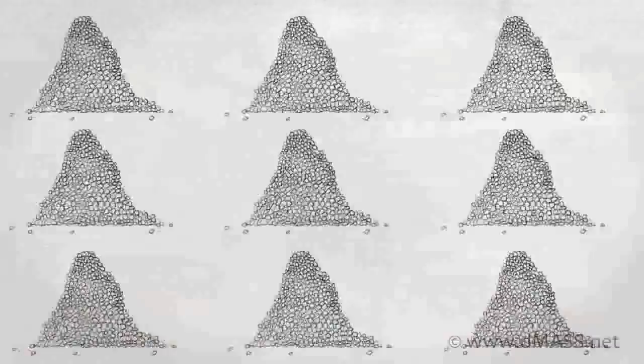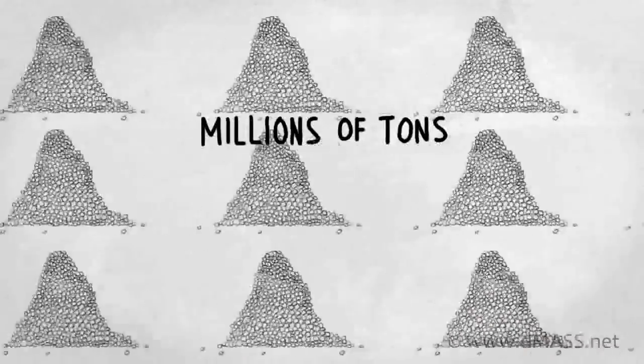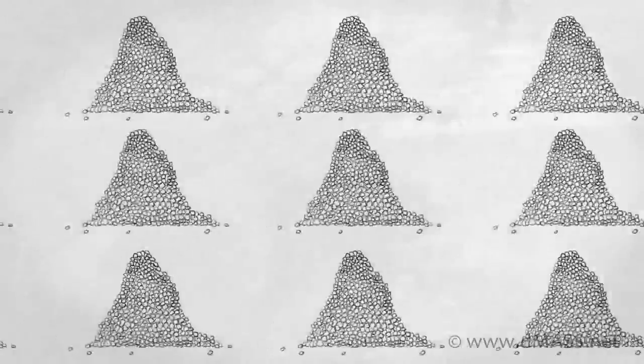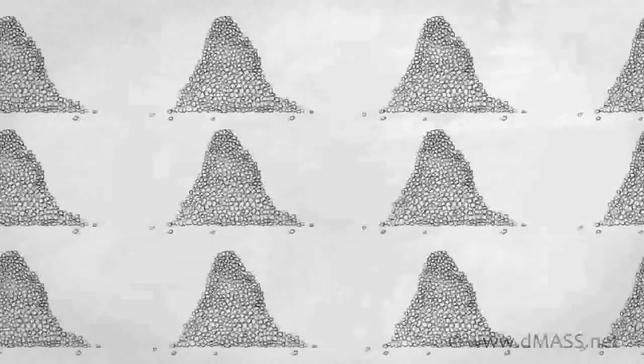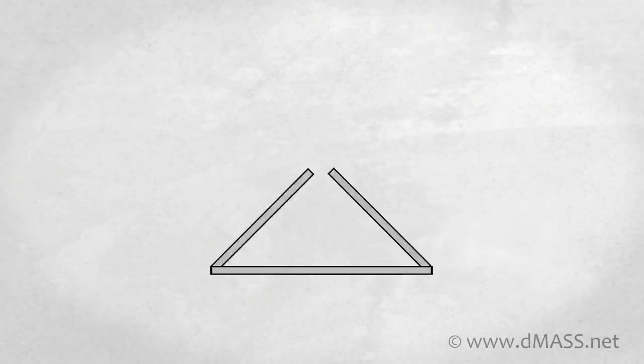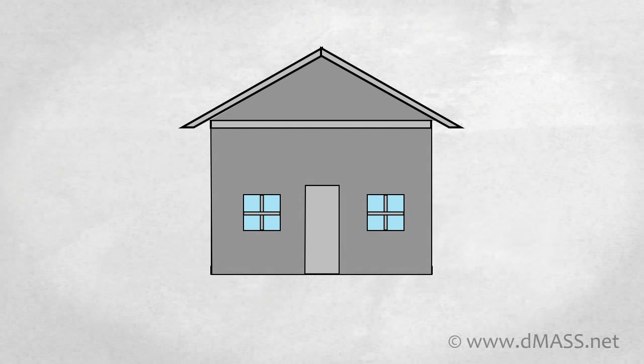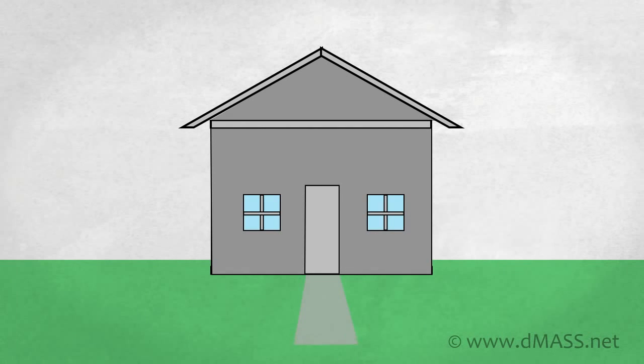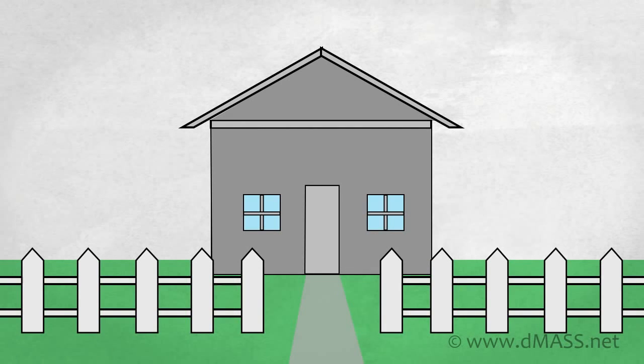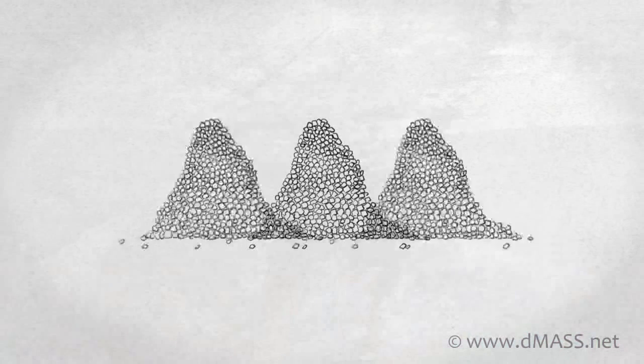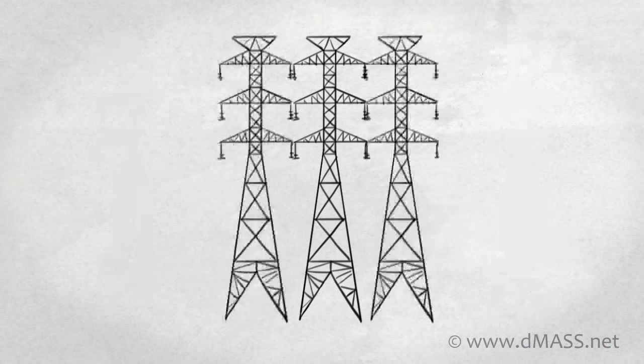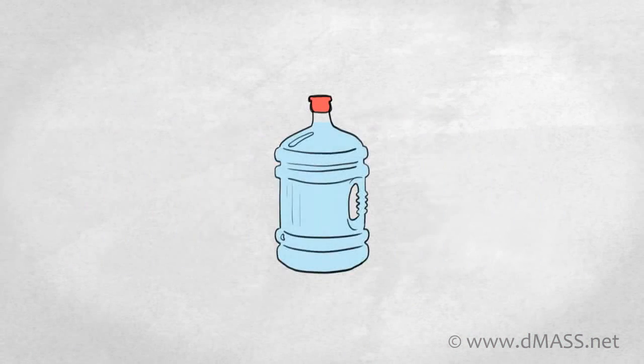We are using millions and millions of tons of resources for things which we don't need to use them for. We still build houses the same way we did 100 years ago, even though our knowledge of materials and resources and being able to design integrated systems that would use a fraction of the materials and a fraction of the energy and a fraction of the water, that we have that knowledge.